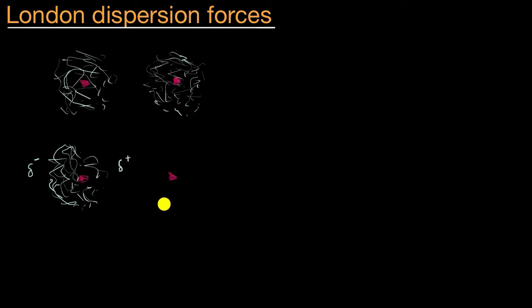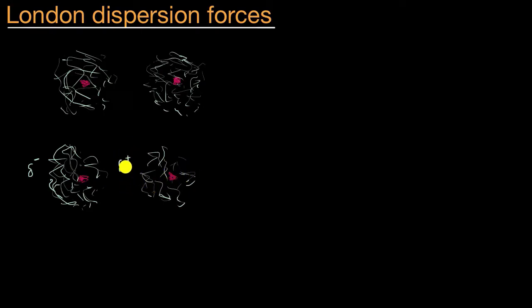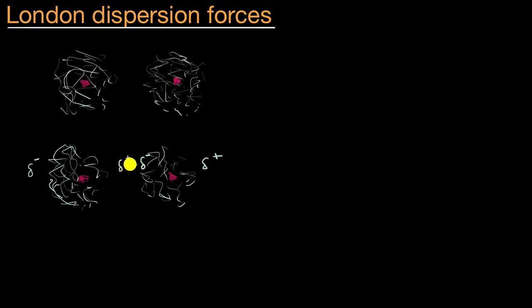We know that like charges repel each other and opposite charges attract each other. So if we have a partial positive charge out here on the right side of this left atom, then the negative electrons might be attracted to it in the right atom. So these electrons might actually be pulled a little bit to the left. That will induce what is called a dipole — you'll have a partial negative charge on the left side of this atom, and a partial positive charge on the right side of it.